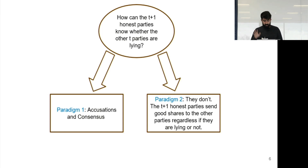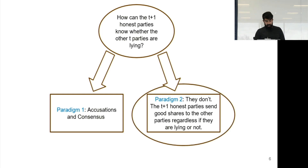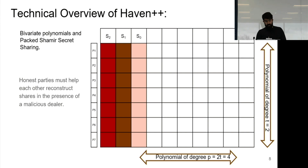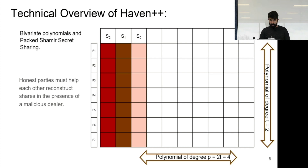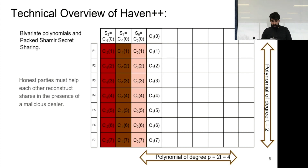There are two main paradigms to solve this. First: use accusation and consensus, relying on primitives such as verifiable information dispersal. Second: have the T+1 honest parties send good shares to other parties regardless of whether they received good shares or not. Haven++ adopts the second solution. Haven++ uses a bivariate polynomial secret sharing structure that allows any T+1 parties to send shares to any other T parties so they don't get left behind. With three secrets S0, S1, and S2, we generate five uniformly random degree-T polynomials where the first three encode the secrets at zero.